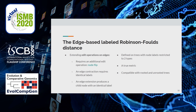Our first extension of the Robinson-Foulds distance to trees with labeled internal nodes was done by extending the Robinson-Foulds edit operations on edges. For this purpose, an edit operation that assigns a new label to an internal node — called node-flip — was added. Additionally, an edge contraction now requires identical labels. Moreover, an edge extension produces a child node with an identical label, preserving the requirements for a metric.